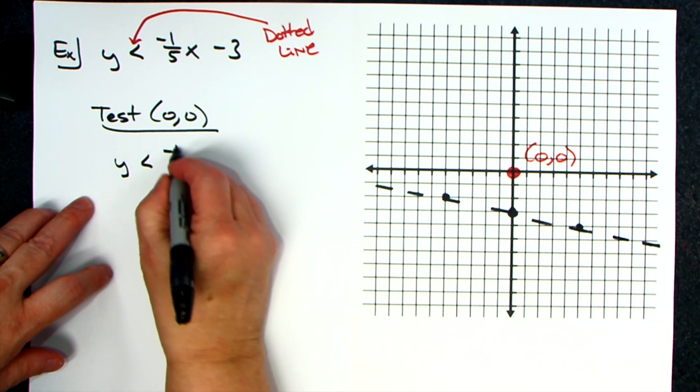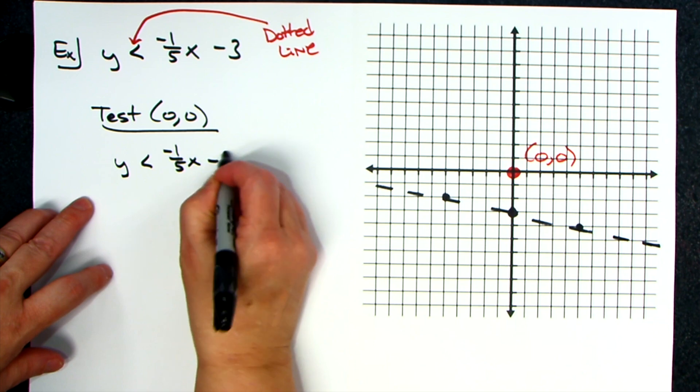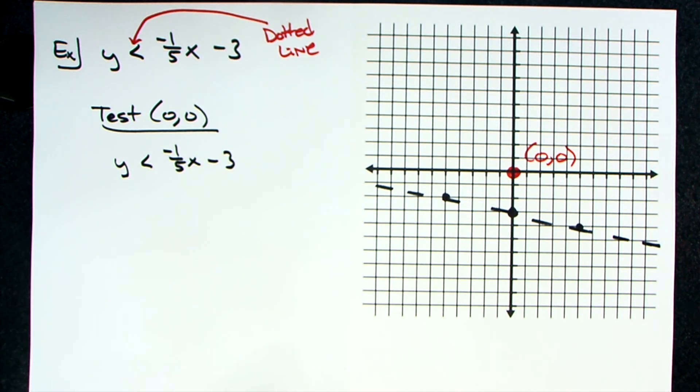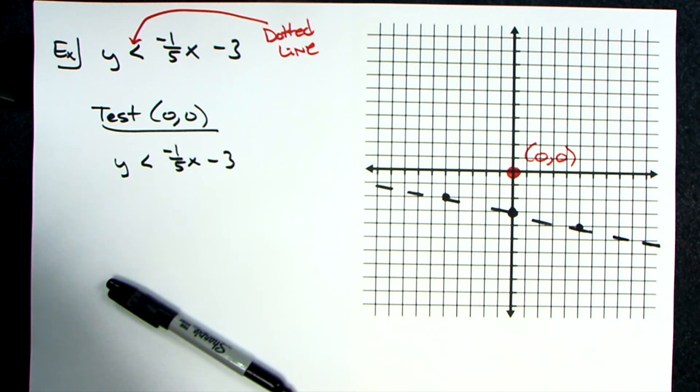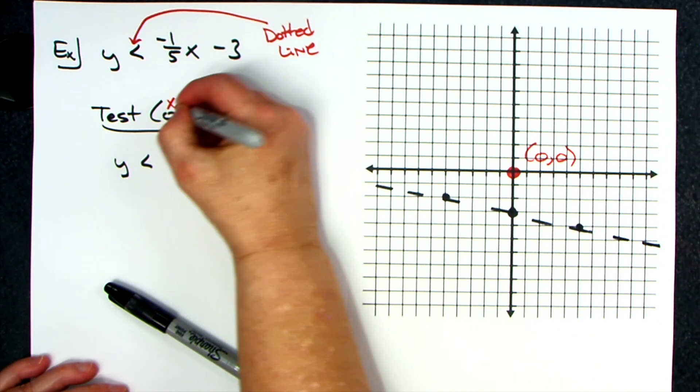y is less than negative one-fifth x minus three. I write the equation down again just so I don't make any silly mistakes. I'm going to plug in zero for x, I'm going to plug zero in for y.